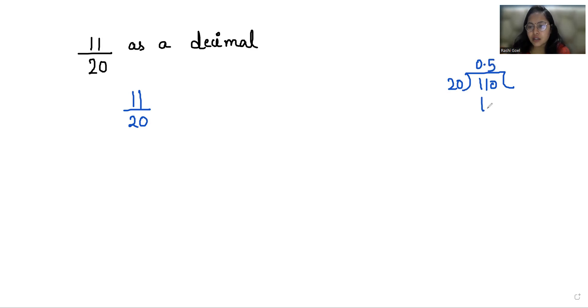So 0 point, we'll go with 5 times, that is 100. We'll subtract 10, again we'll take one more 0 and 5 times is 100. So in terms of decimal, 11 by 20 we can write it as 0.55.